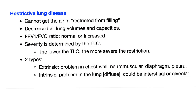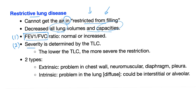Restrictive lung disease: my lungs are restricted from filling, I cannot get the air in — same concept as restrictive cardiomyopathy where the heart cannot fill with blood. You have a decrease in all lung volumes and capacities. FEV1/FVC ratio is normal or increased — this is how you diagnose restrictive lung disease. To determine severity, look at total lung capacity: the lower the TLC, the more severe the restrictive lung disease.